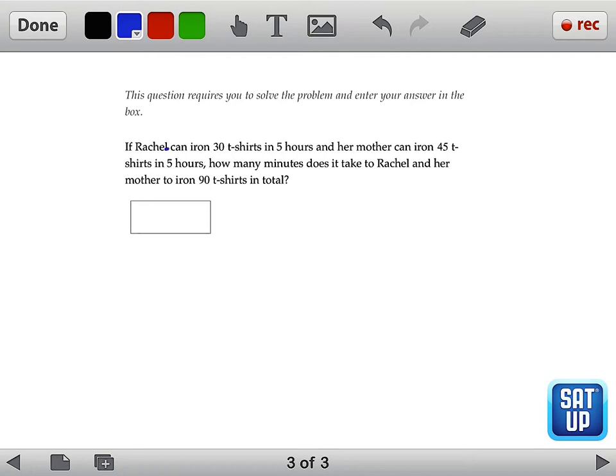If Rachel can iron 30 t-shirts in 5 hours and her mother can iron 45 t-shirts in 5 hours, how many minutes does it take Rachel and her mother to iron 90 t-shirts in total?